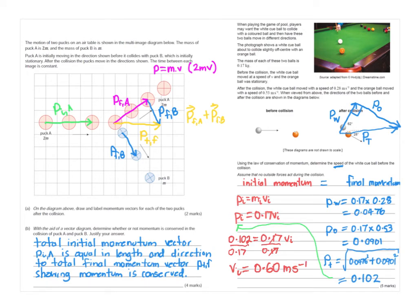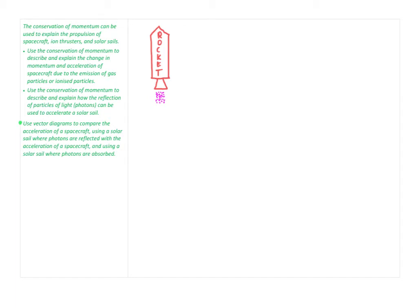Now let's look at the final part of conservation of momentum: using it to explain the propulsion of spacecraft, ion thrusters, and solar sails. We need to use conservation of momentum to describe and explain the change in momentum and acceleration of spacecraft due to emission of gas or ionised particles, and to explain how reflection of photons can accelerate a solar sail, including comparing reflected versus absorbed photons using vector diagrams.